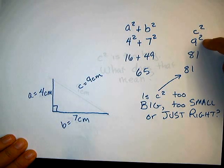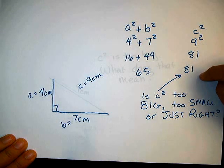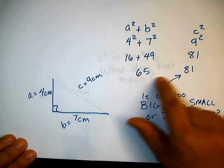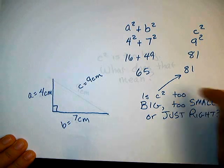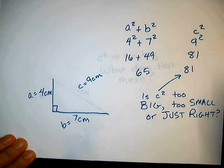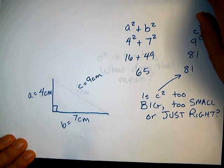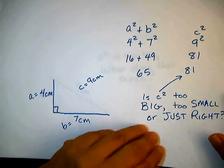Now I square C. It's 9 squared, which is 81. And 81, if it was a right triangle, these two should match exactly, but they don't here. In fact, it's too big. So if it's too big, what does that mean?